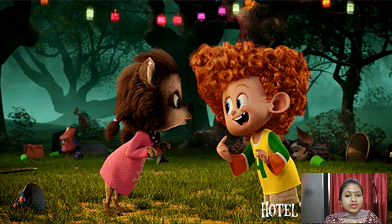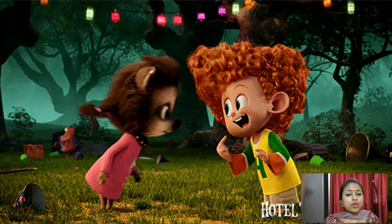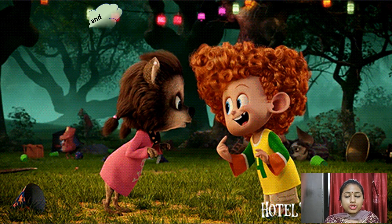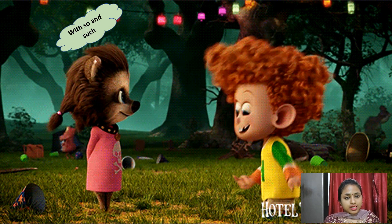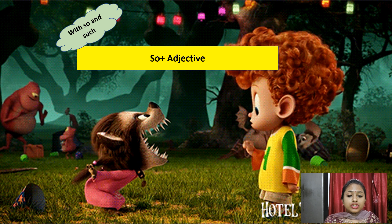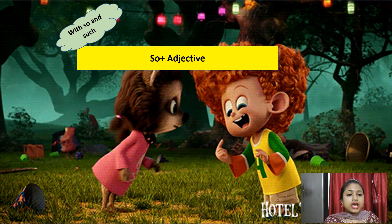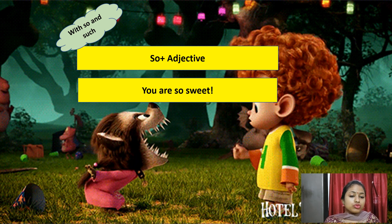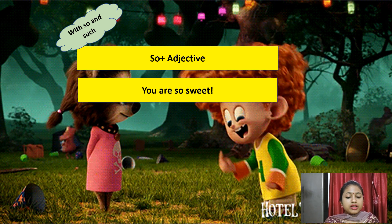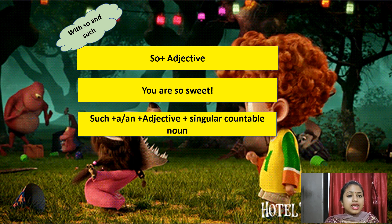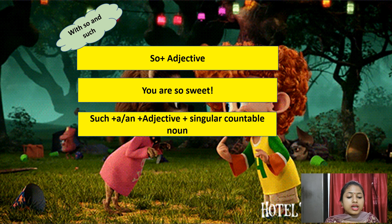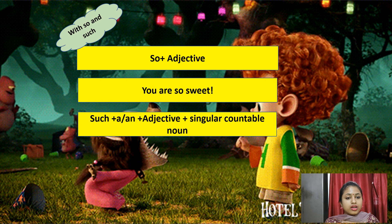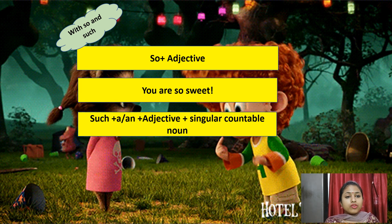Now let's learn how to frame exclamatory sentences with 'so' and 'such.' With 'so': so + adjective — for example, 'You are so sweet!' With 'such': such + a/an (depending on the adjective) + adjective + singular countable noun. For example: 'She is such a lovely girl!' — such a, then adjective 'lovely,' then noun 'girl,' and exclamation mark. Now we are done with framing exclamatory sentences.